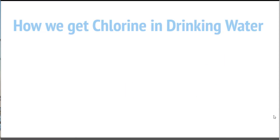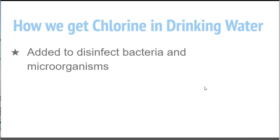So how do we get chlorine in drinking water? I think it's important to realize and understand how this works — it's going to give you a lot of insight into why we need to remove it. Chlorine is added to drinking water in order to disinfect it. It kills bacteria and harmful microorganisms. It is necessary because most water comes from underground aquifers and groundwater streams that can be contaminated with bacteria.